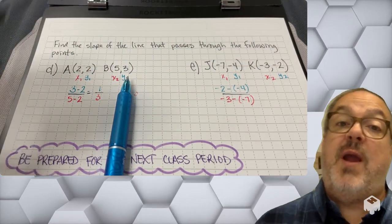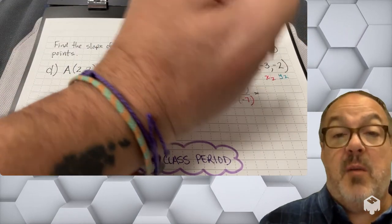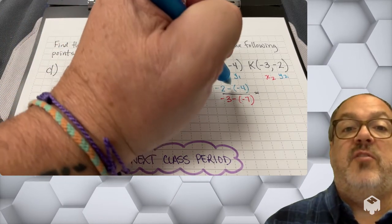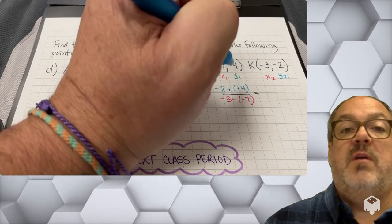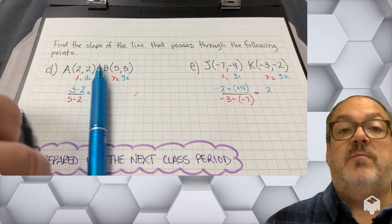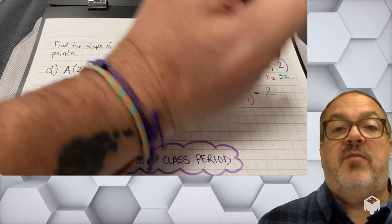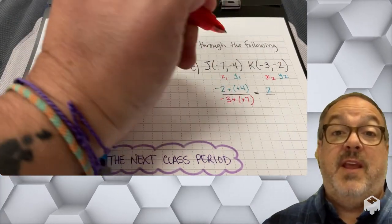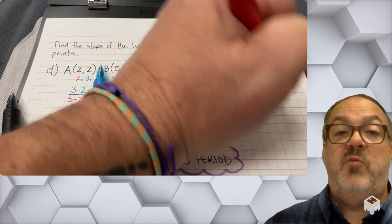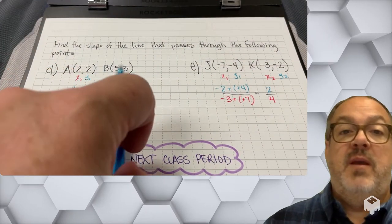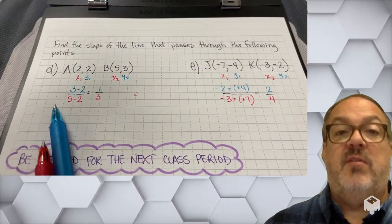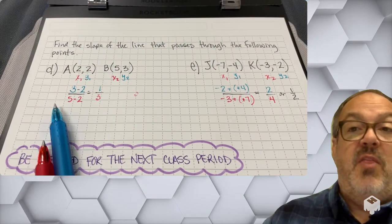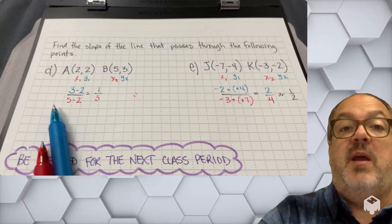Now remember, when I'm subtracting a negative number, I'm doing the opposite, so I'm going to be adding. So -2 plus 4, that's going to be positive 2. And then -3 minus -7, that's really -3 plus 7, which will be positive 4. And I can simplify 2/4 to be the fraction 1/2, so that is going to be my slope.